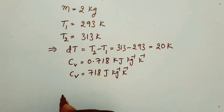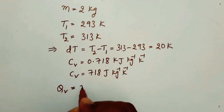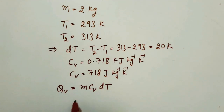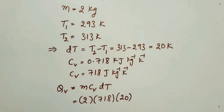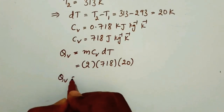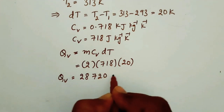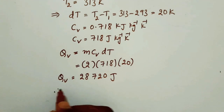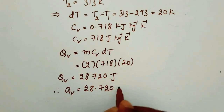We know the amount of heat absorbed at constant volume is QV = M × Cv × ΔT. Here M is 2 kg, Cv is 0.718 kJ per kg per Kelvin, and ΔT is 20 Kelvin. So from this we can get QV is equal to 28,720 joules, which can be written as QV is equal to 28.720 kJ.